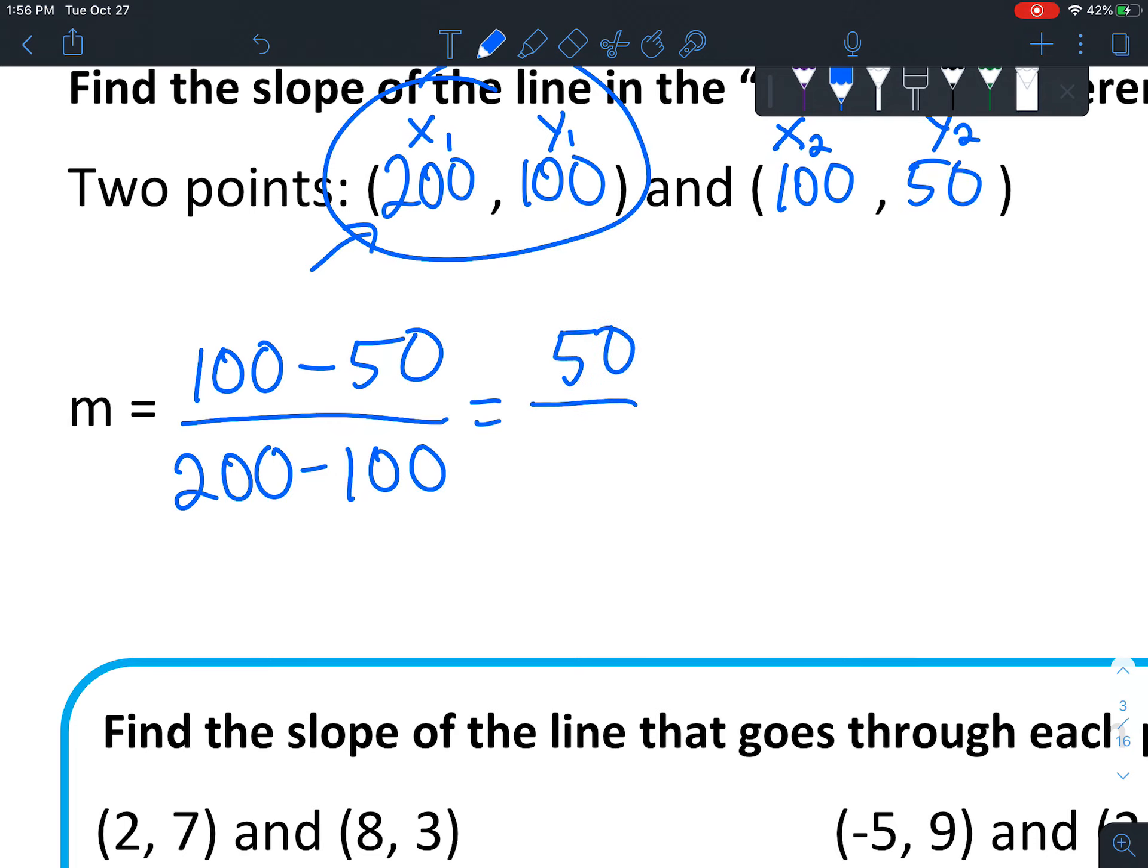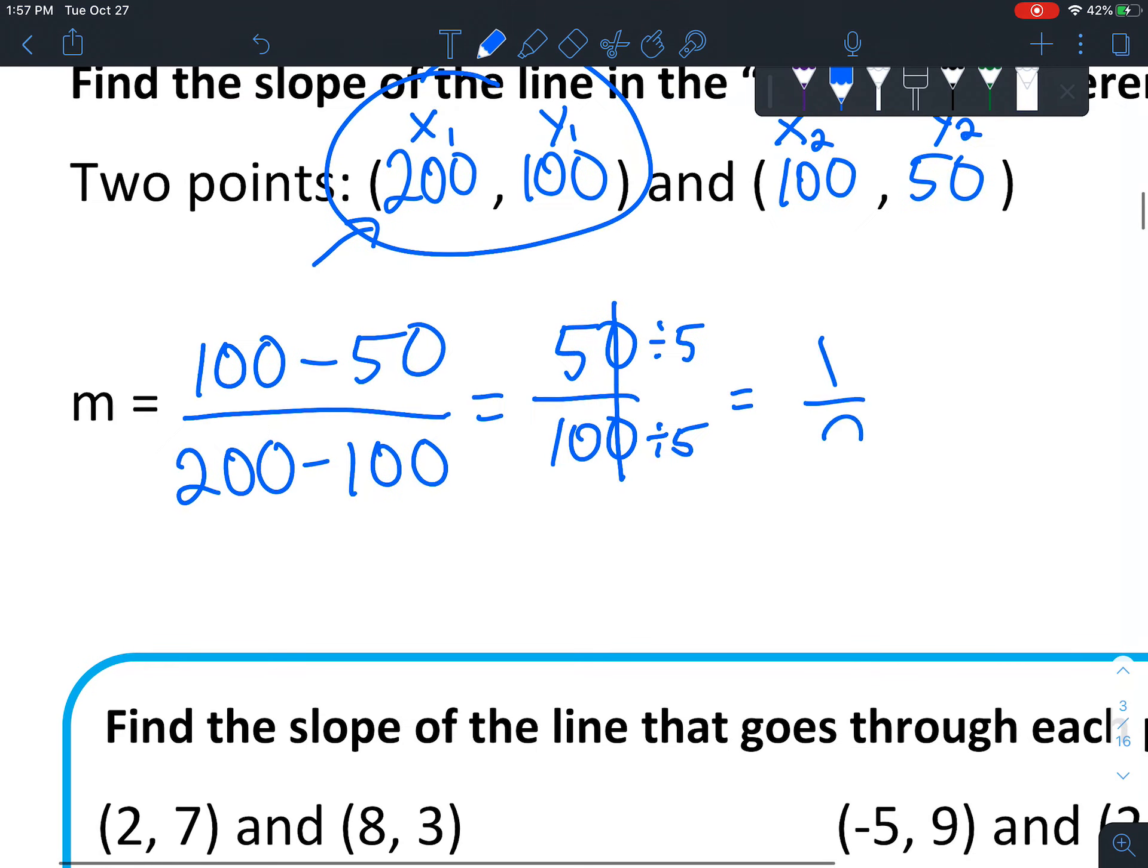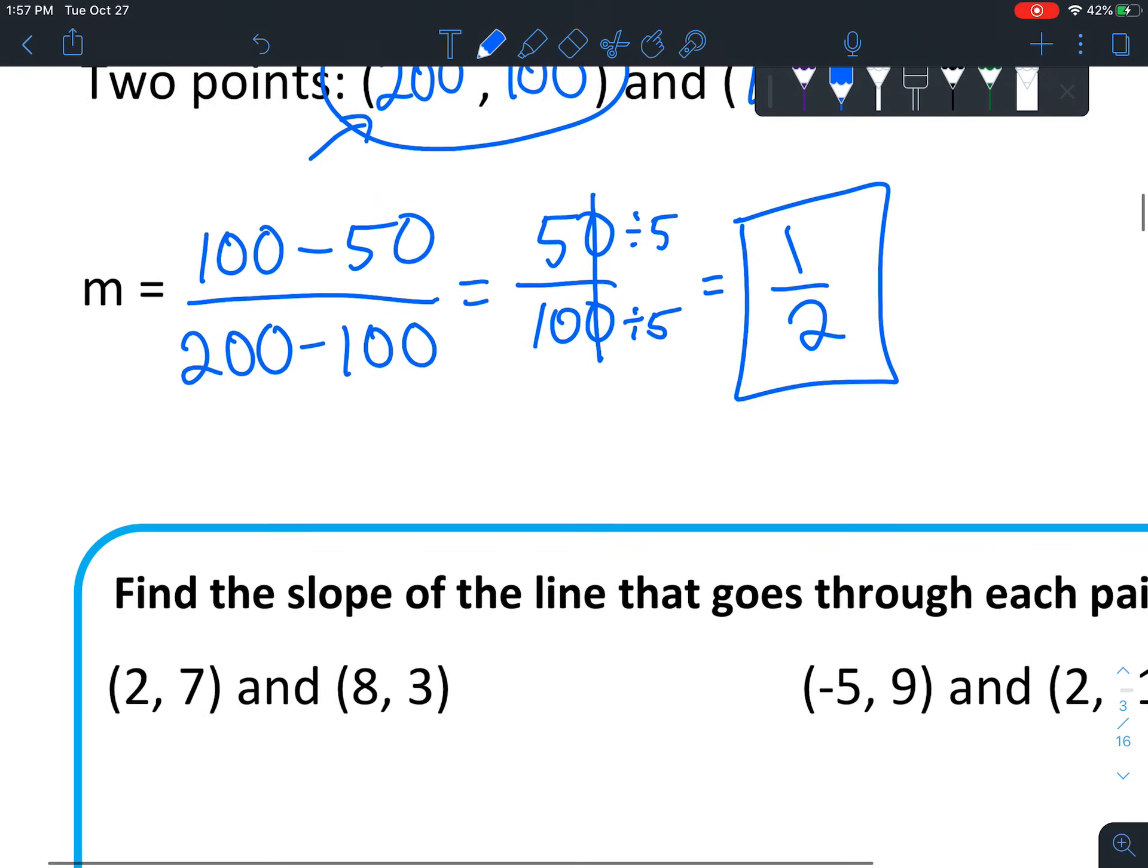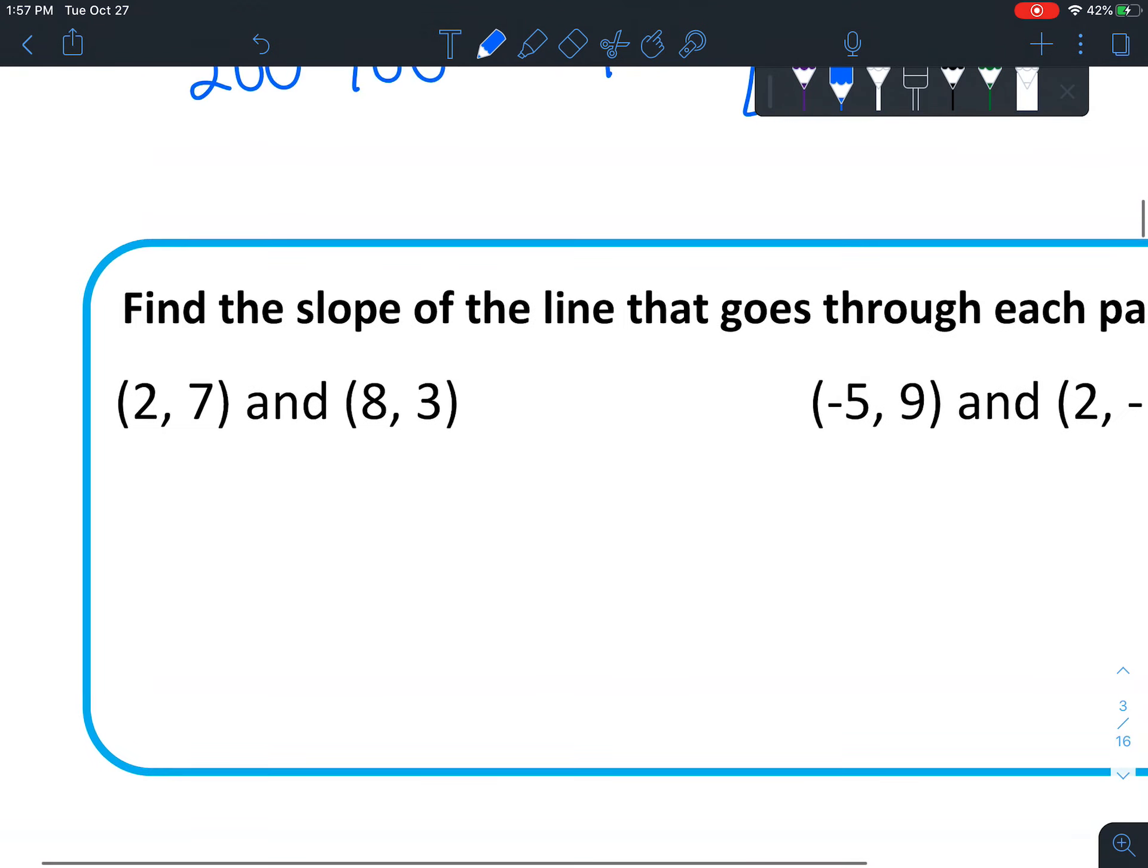100 minus 50 is 50. 200 minus 100 is 100. Now when you simplify that, if you have zeros, you can cross those out, and then divide by 5 to get 1 over 2. So we have a slope of 1 half. And today we're just practicing finding the slope. So let's do that a few more times.